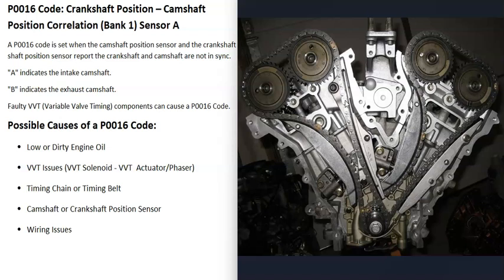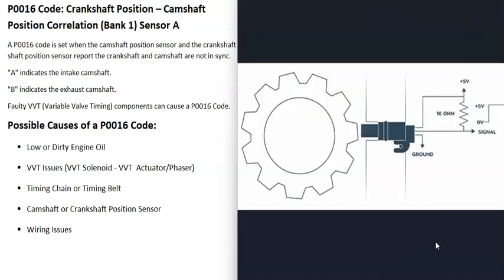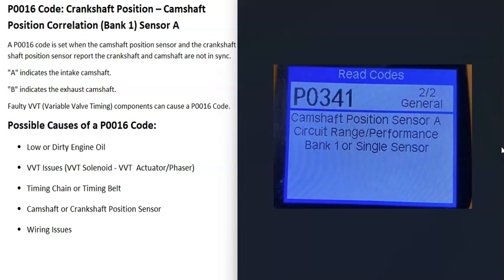A bad camshaft or crankshaft position sensor is another possible cause. If one of those sensors goes bad, it may just be reporting bad information back to the computer, making it think there's a problem when there isn't. This mainly applies to the camshaft position sensor A on bank one. Usually you'll also get a related code, such as camshaft position sensor A circuit range/performance bank one, in which case you should test the sensor and wiring.